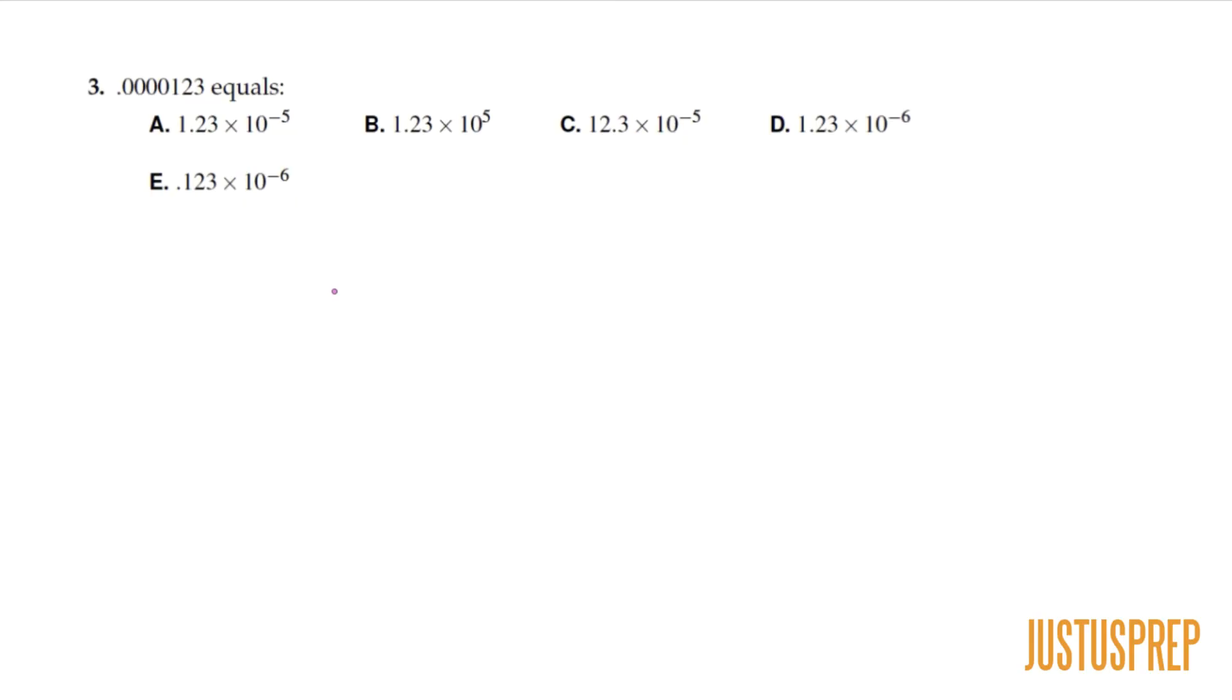Number three, 0.0000123 equals. So this question is asking us to rewrite this decimal in scientific notation. There are two rules that we want to apply at the outset. The first is that you always have to create a number that is in between 1 and 10.